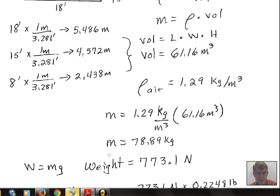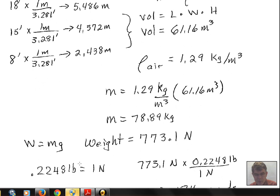Multiplying that by 9.8, weight is equal to mass times acceleration due to gravity. Acceleration due to gravity is 9.8 meters per second squared. We find we have 773.1 newtons as the weight for the air.